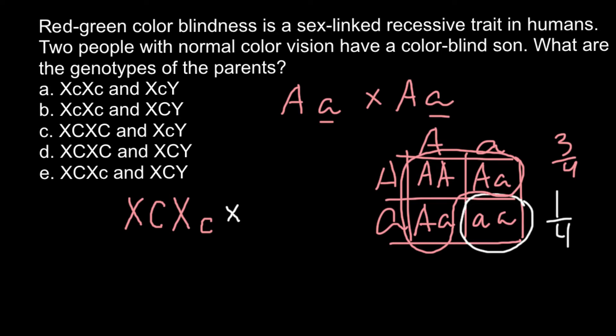We cross that genotype with the male genotype. We know that the male has one X chromosome and one Y chromosome. As long as this male is phenotypically normal, that means his X chromosome should have the capital C, or normal allele.